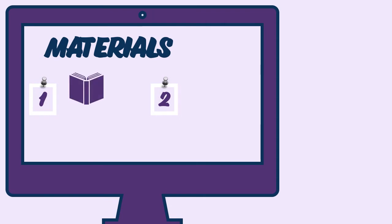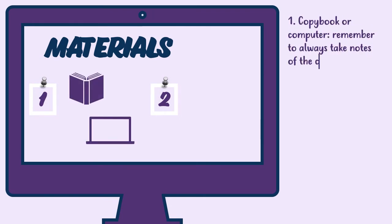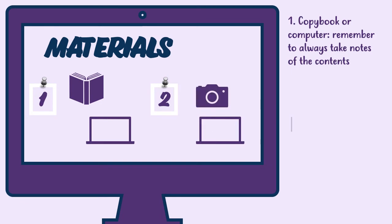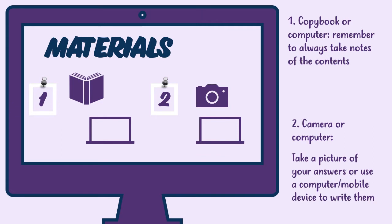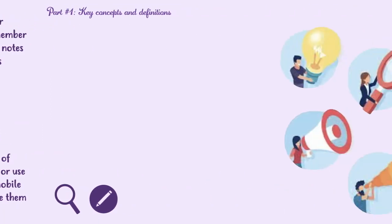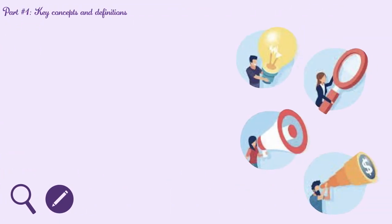Now let's have a look at the materials we are going to need for this challenge. Number one: a copy book or a computer — remember that here you have to take notes of the contents. Number two: a computer or a camera — here you will need to take a picture or write down the activities you are going to do in the challenge.